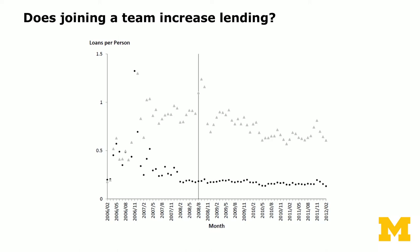A natural and simple question to ask is: does joining a team increase lending? Looking at raw data from 2006 to 2012 — six years of data — the vertical axis shows the number of loans per person per month. The black dots represent people who never joined a lending team, while the light triangles represent those who joined a team. People who belong to a team appear more active, so there seems to be a gap between the triangles and the dots.